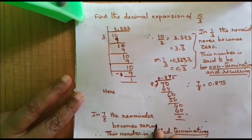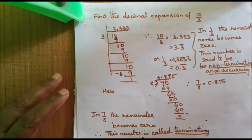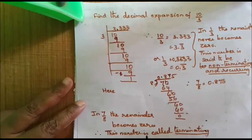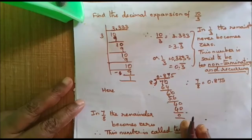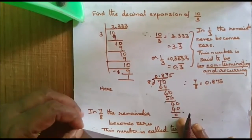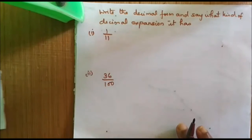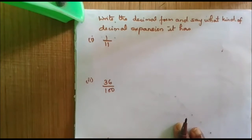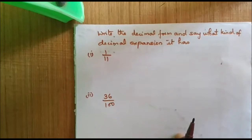The earlier example was non-terminating and recurring, whereas in this case the division stops at one point. When the remainder is 0, the division stops. Such numbers are called terminating. So for any given fraction, there are only two conditions: either it will be terminating or it will be non-terminating and recurring.